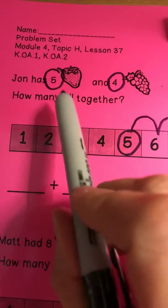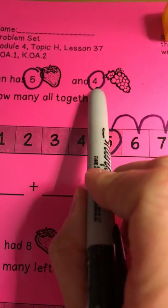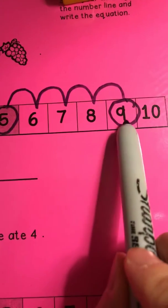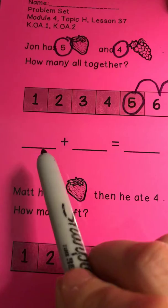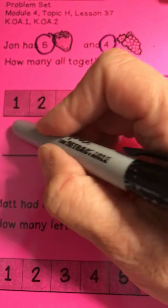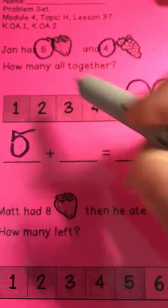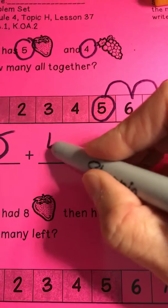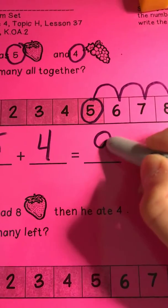So five and four makes nine. Now I'm gonna come down here and write that in my number sentence: five plus four equals nine.